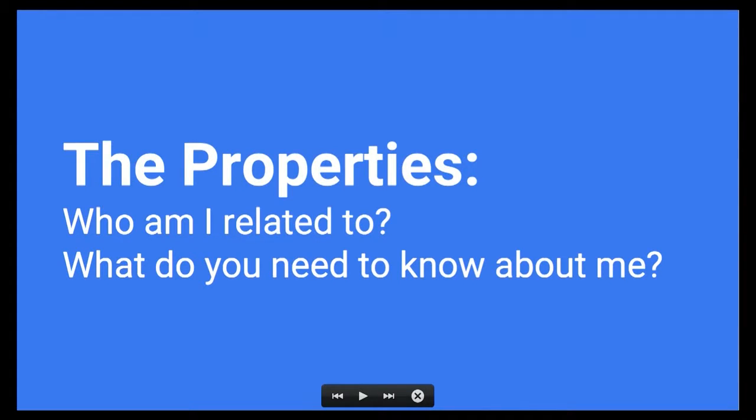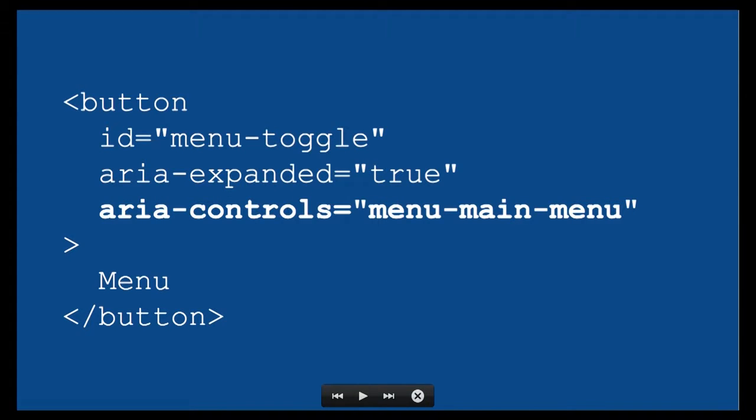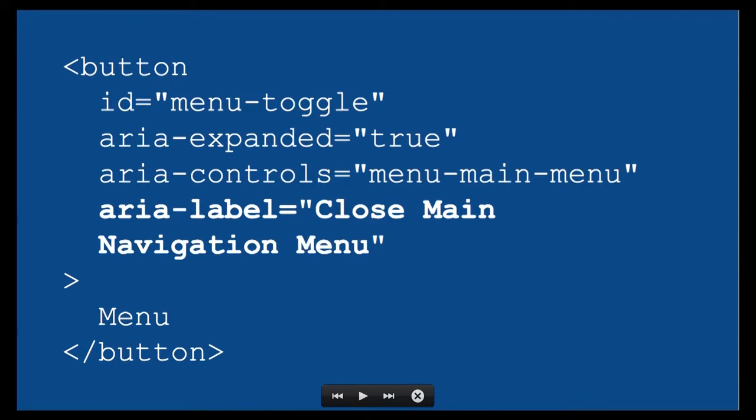This is where we get to properties — who am I related to, and what do you need to know about me? We've got that button, and now we tell it what it controls using aria-controls, which takes the ID of the target. So the button knows not only that it's open, but exactly what it is opening — and you can grab that in your JavaScript directly without adding extra data attributes. You can go even further and give the button more information using aria-label. Instead of just displaying 'menu' for sighted users, for non-sighted users it could say 'close main navigation menu' when open, or 'open' when it's not. An ARIA label substitutes the text of the button so it reads something different to assistive technology — use this with caution.